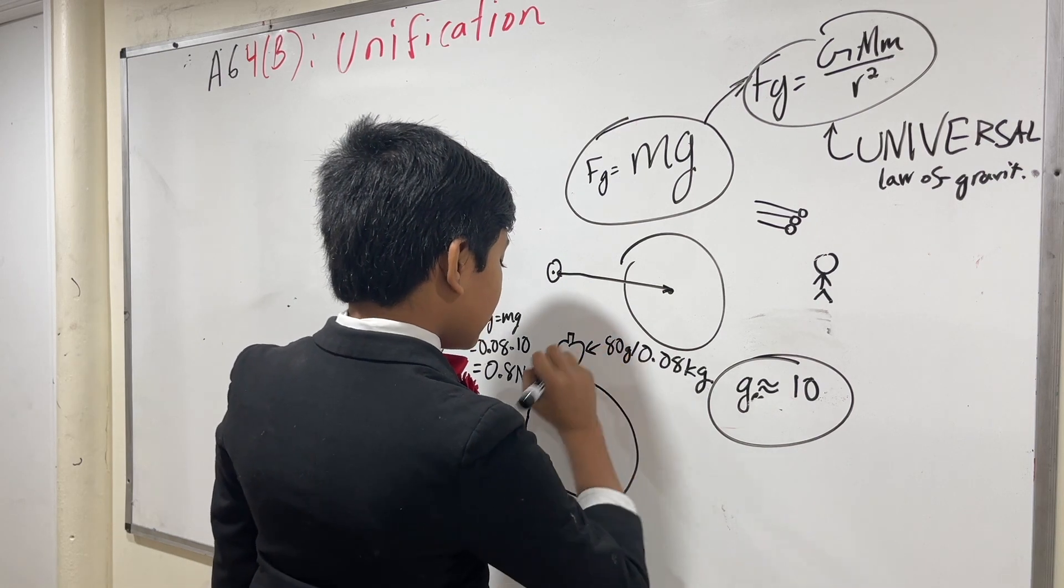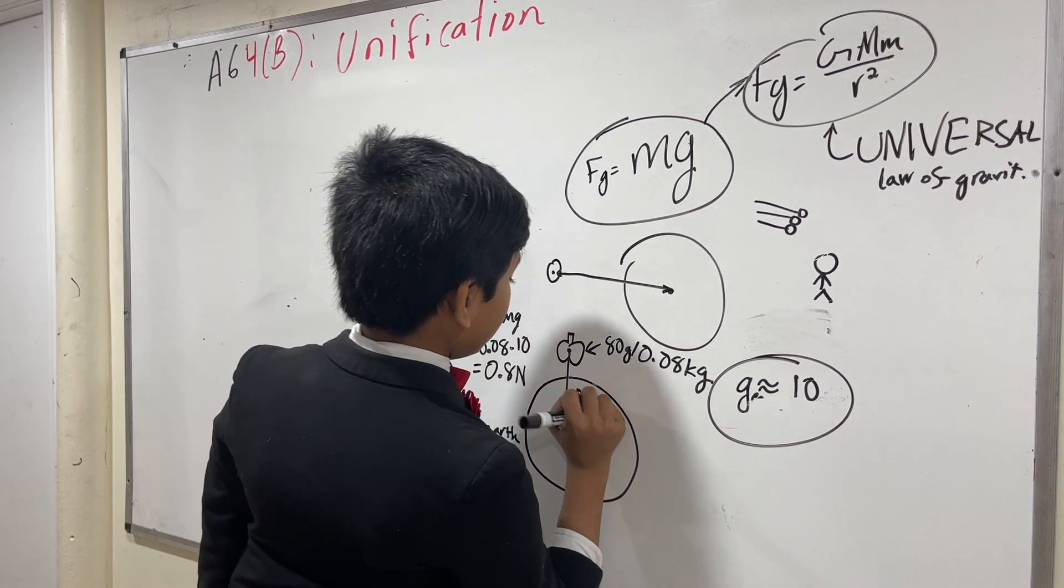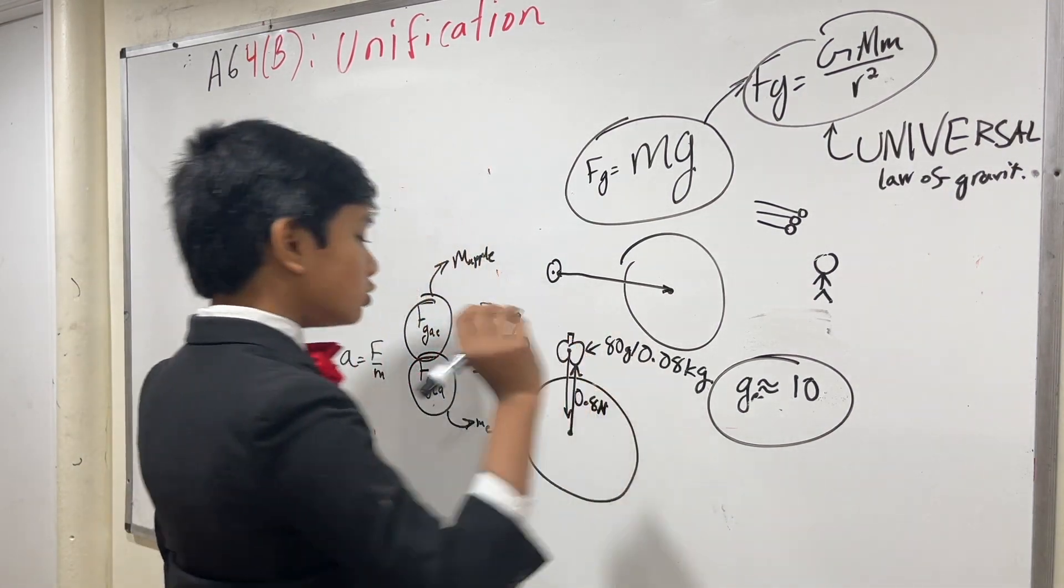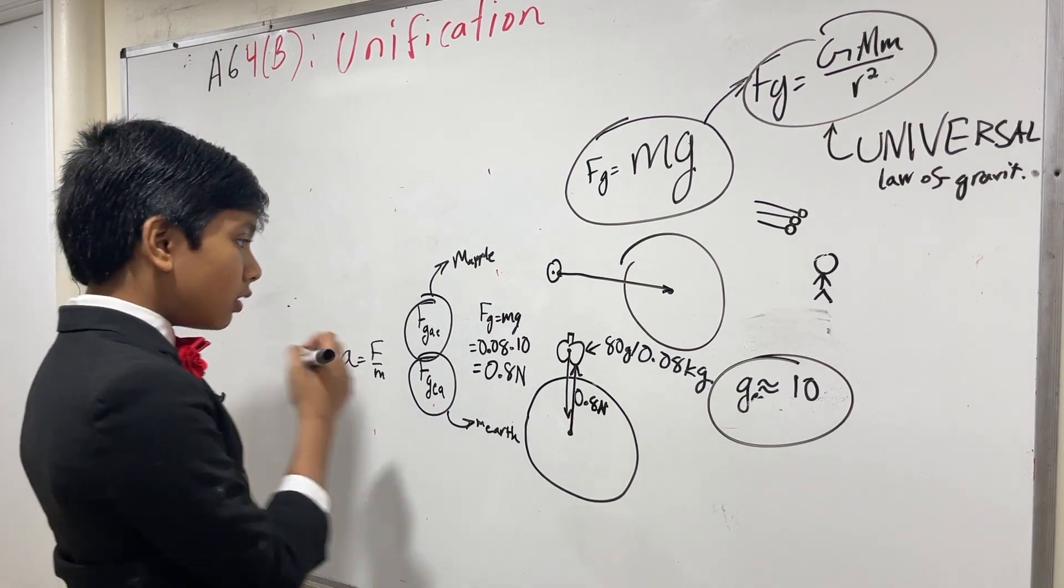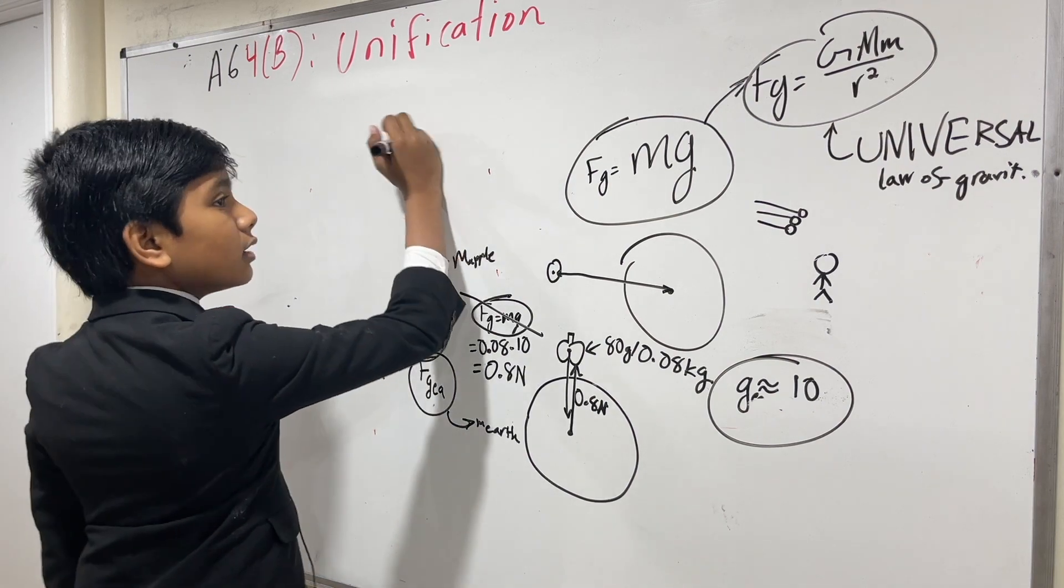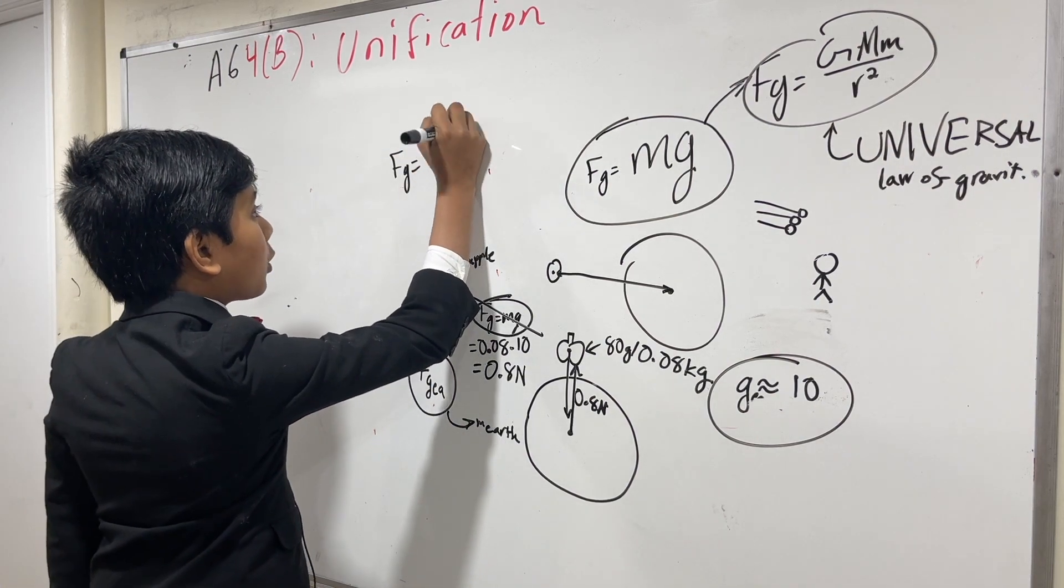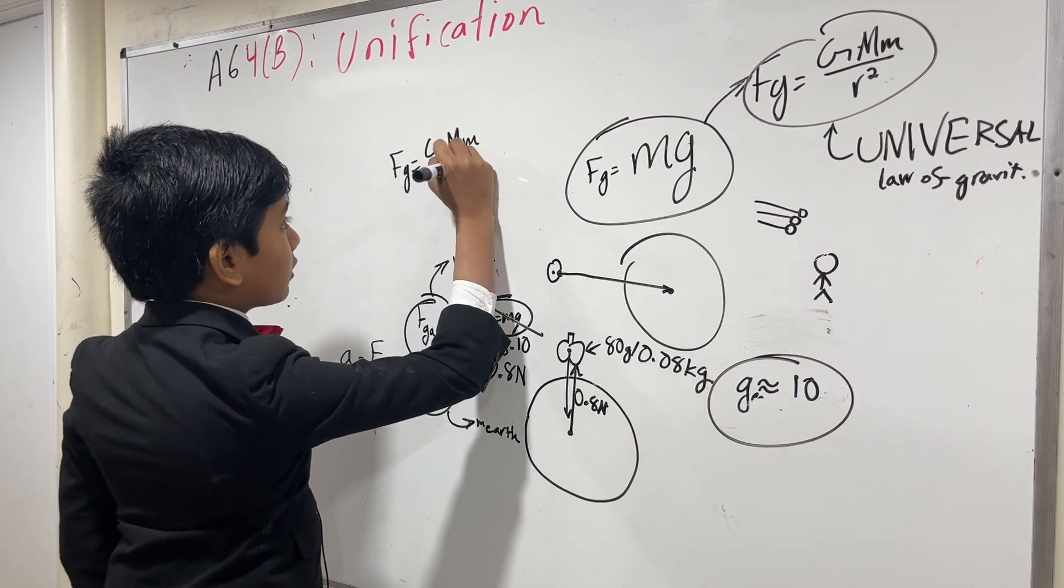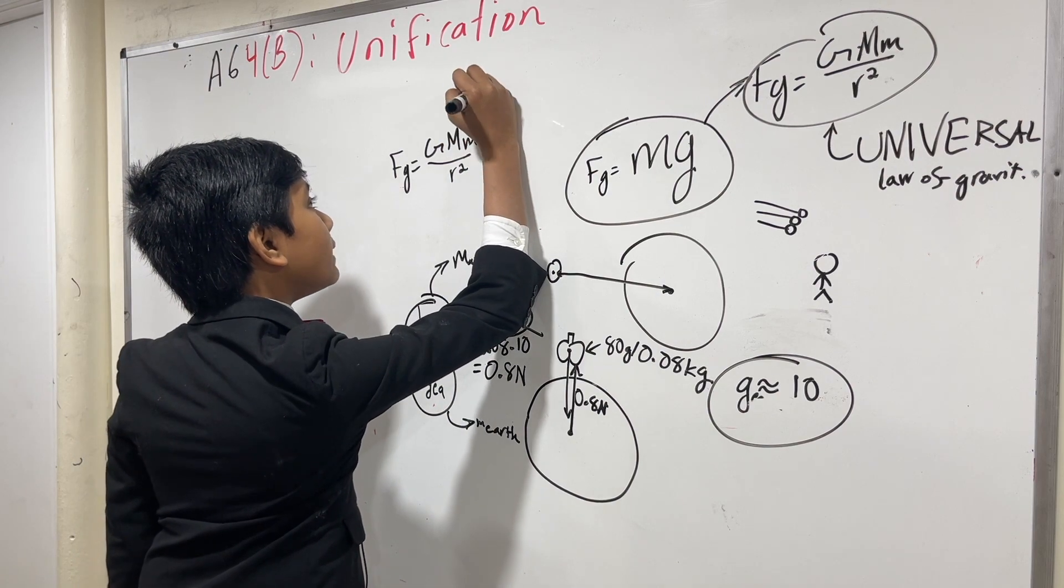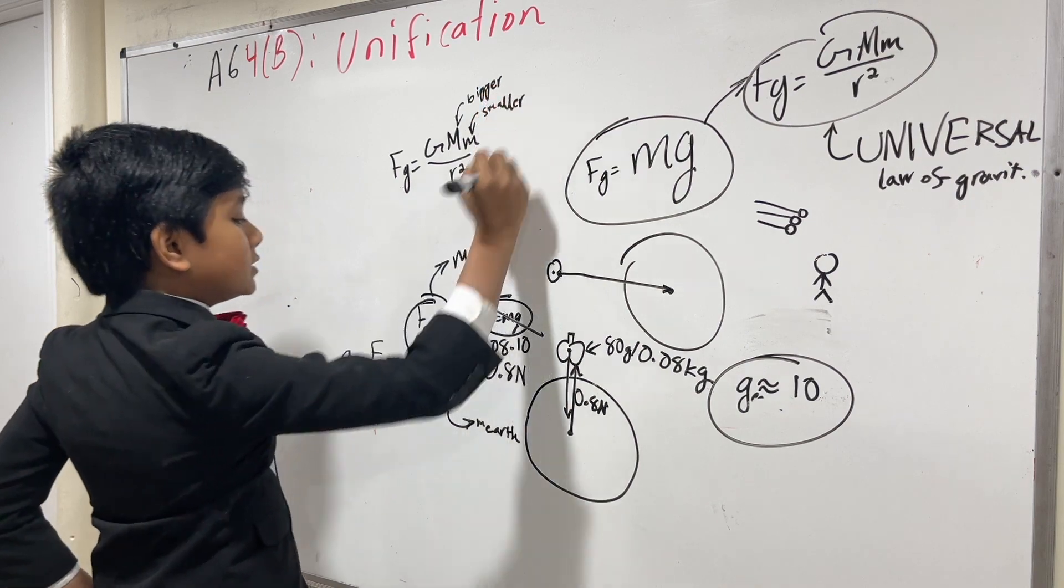So that means that the force that the Earth exerts on the apple is 0.8 newtons. What about the force the apple exerts on the Earth? Well, it's also 0.8 newtons. How do we know? Well, let's not use this gravitational equation, but rather the gravitational equation Fg is G big M little m over r squared. If you don't understand what big M or little m means, this is the bigger mass, and this is the smaller mass.